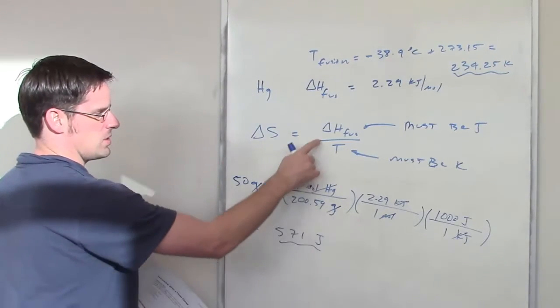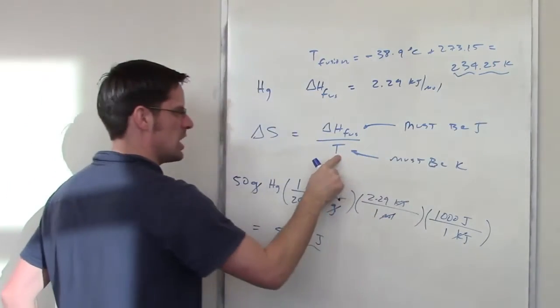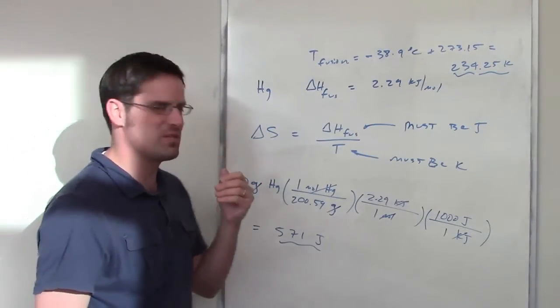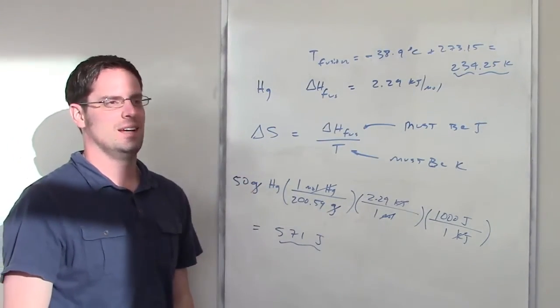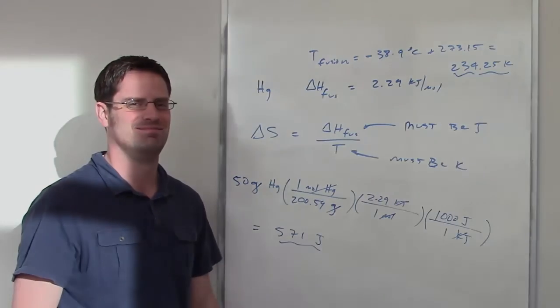That is the value that goes in the numerator here. This temperature goes in the denominator here. You throw that in there, you should get your final delta S, and it should be in units of joules per kelvin, which I think is actually the correct unit, so there you go.